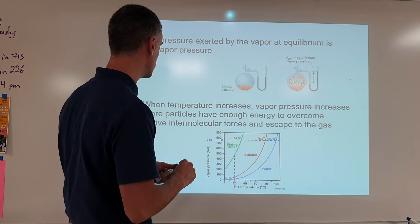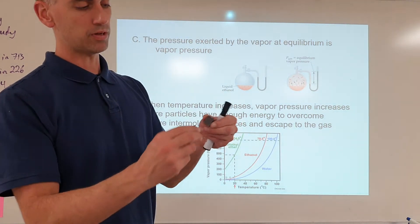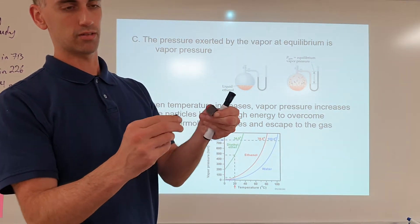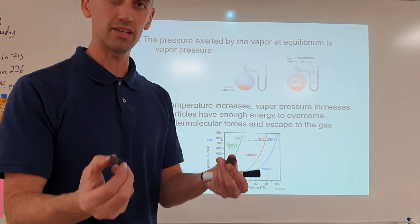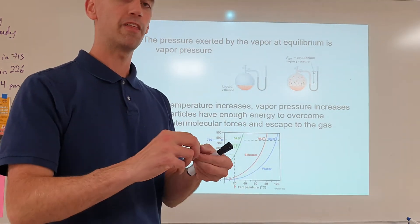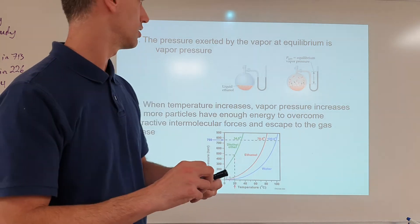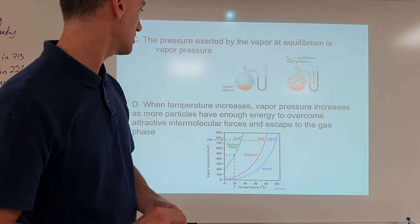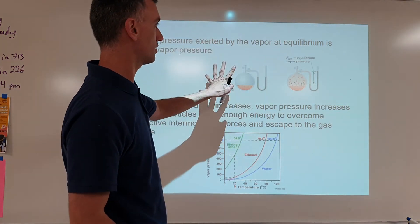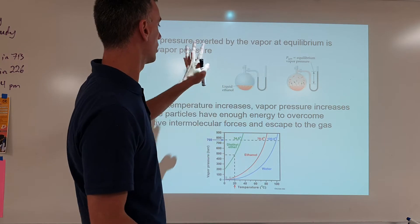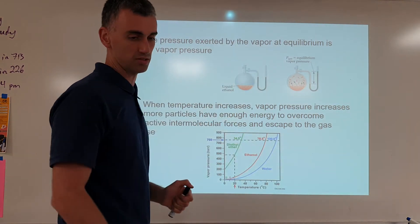Strong intermolecular forces, because they don't evaporate well — they're unable to separate — means low vapor pressure because there's not much vaporization going on. Weak intermolecular forces separate easily because there's less attraction, so they evaporate more easily and faster, which makes more vapor pressure. So we tend to see high vapor pressure for weak intermolecular forces, and low vapor pressure for strong intermolecular forces.